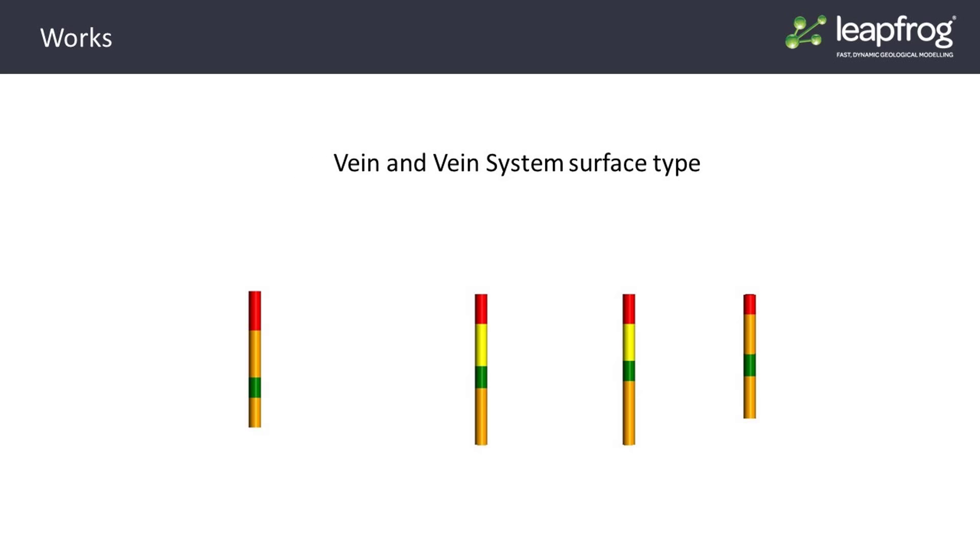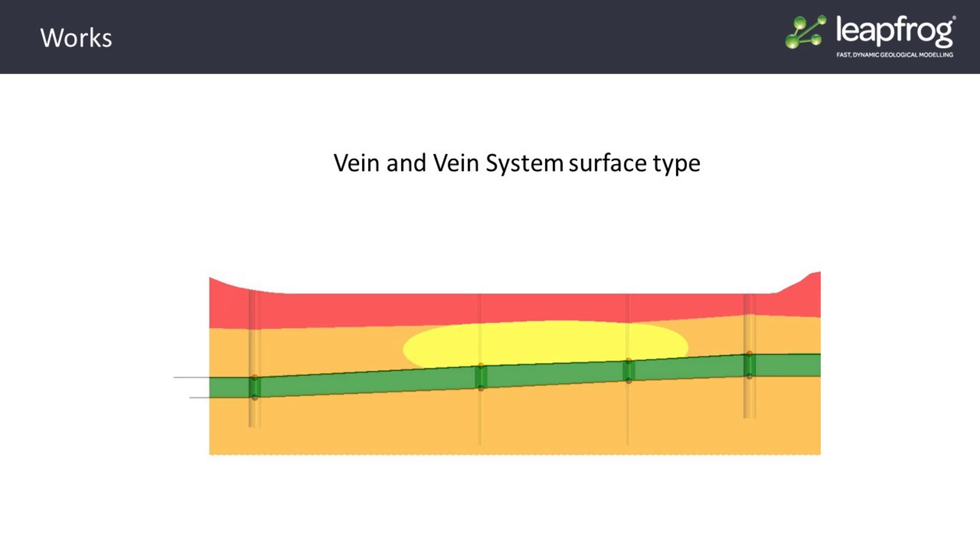The vein and vein system tool are both suitable for modelling thin, tabular volumes such as lenses or dikes. We start by specifying the lithology that is inside the vein, in this case the green unit. LeapFrog will then take each interval of that lithology and assign a hanging wall point to the top of the interval and a footwall point to the bottom of the interval. Each set of points is then surfaced to produce a hanging wall surface and a footwall surface. The hanging wall and footwall surfaces will extend to the model boundary by default and the volume in between the two surfaces will comprise the vein.